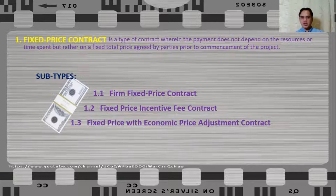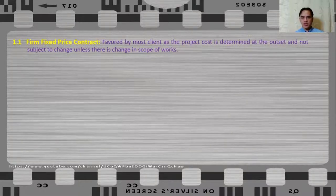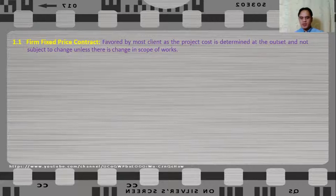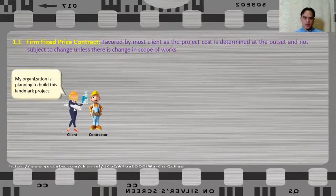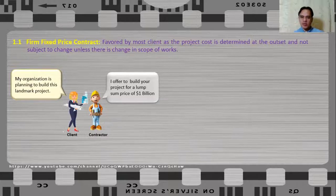For a firm fixed price contract, this one is favored by most clients as the project cost is determined at the outset and not subject to change unless there is a change in the scope of works. The total amount will be agreed and this is the only amount that will be paid. For example, the client is planning to build a landmark project and the contractor offers to build it for a lump sum price of $1 billion — the total amount the contractor will be paid regardless of how much resources are used.